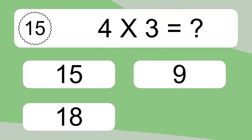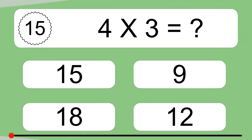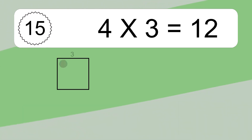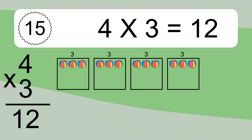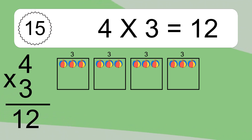Four times three equals what? Four times three equals twelve. We have four boxes and each box has three colorful balls inside. If you count all the balls in all the boxes together, you will have four times three balls. This equals twelve balls.